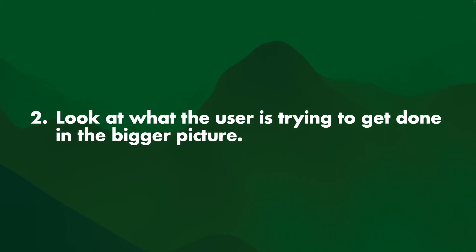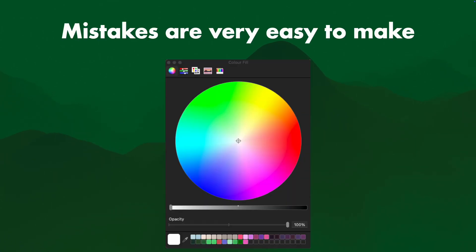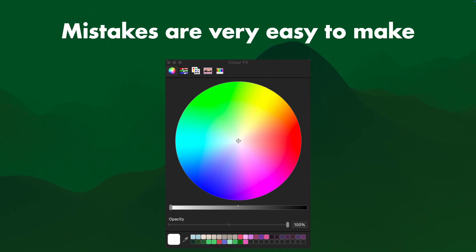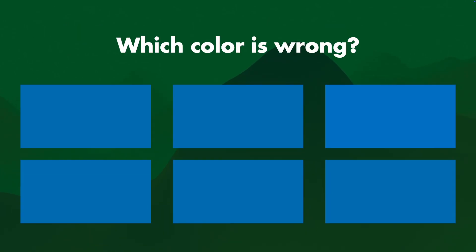Are they trying to win art awards, design awards? Are they trying to sell a lot of copies? What is the particular thing they're trying to do with these tools? Because mistakes are very, very easy to make. If we have a color picker where any user can pick any color at any time, it's very easy to accidentally pick the wrong color. In these six squares, which color is wrong? Take a look at it.